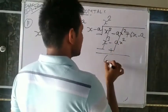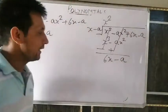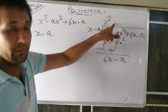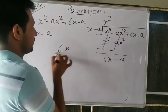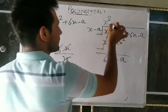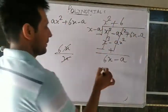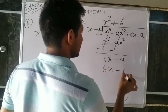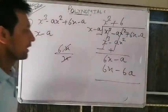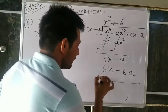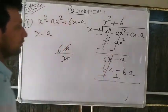Positive becomes negative, negative becomes positive. x³ minus x³ equals zero. Minus ax² becomes plus ax². And the original coefficient is −ax², so −ax² + ax² equals zero, since they are like terms. What remains is 6x − a. Again write a number in the quotient — when multiplied it becomes 6x.